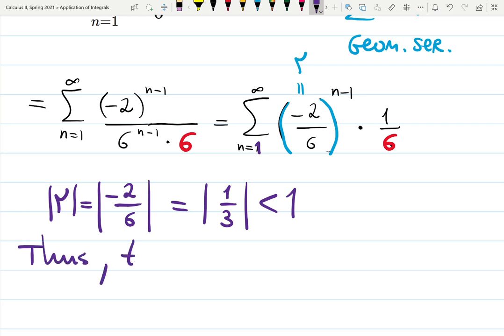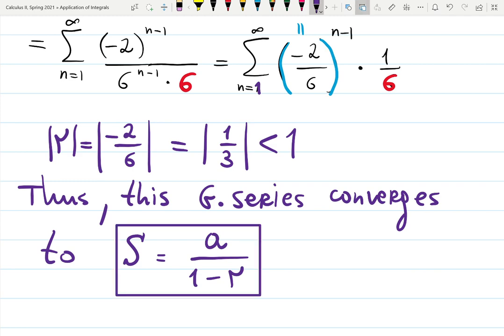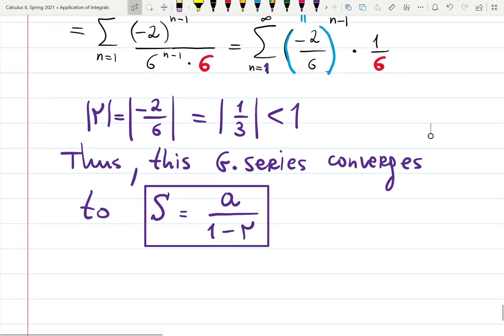This geometric series converges, and it also converges to a known sum. S equals the first term a over one minus the common ratio. That's the known formula of the finite total sum of the converged geometric series. It only happens when r by absolute value is less than one.